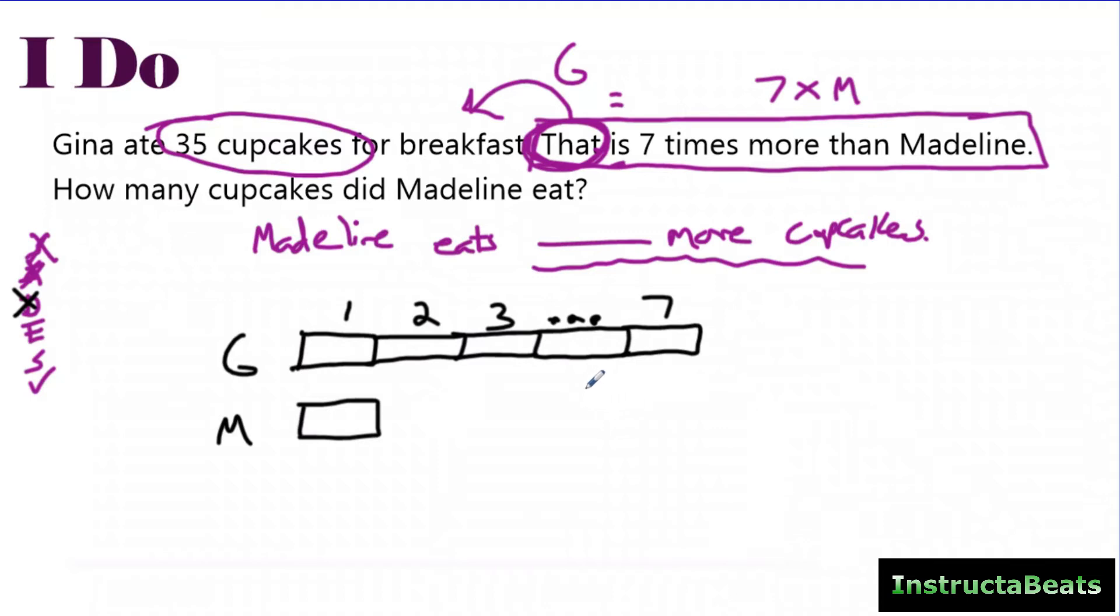Now it says, Gina ate 35 cupcakes. Not 35 in each. She had 35 cupcakes. That means her whole tape diagram is equal to 35. I want to know how many cupcakes Madeline ate. So my question mark is right here. This is all the information I have. I have enough to answer this question. I know that Gina has seven equal groups and she had 35 total. She had 35 cupcakes total into seven equal groups.